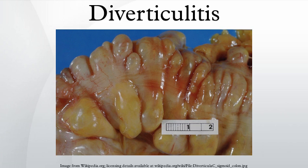The cause of diverticulitis is unknown. The development of colonic diverticulum is thought to be a result of raised intraluminal colonic pressures. The sigmoid colon has the smallest diameter of any portion of the colon, and therefore is the portion which would be expected to have the highest intraluminal pressure.